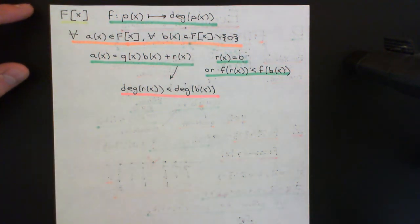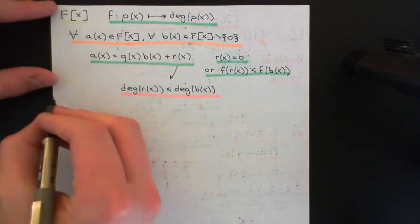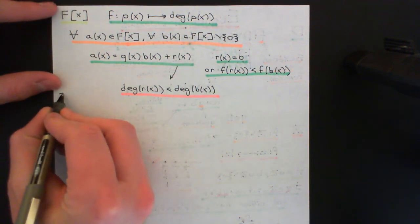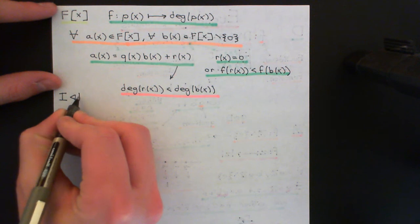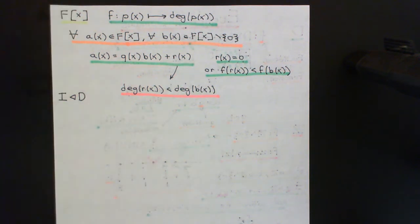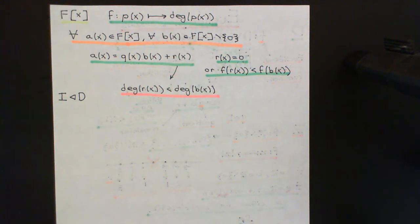We'll call our Euclidean domain capital D. Let's say we have some ideal within our Euclidean domain capital D. Remember, a Euclidean domain after all is just a commutative ring, so we can still easily talk about ideals in there. It just means exactly what it did before — we've just got added structure, which is the Euclidean size function.